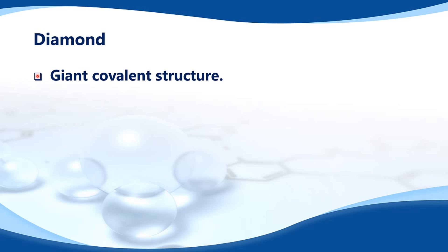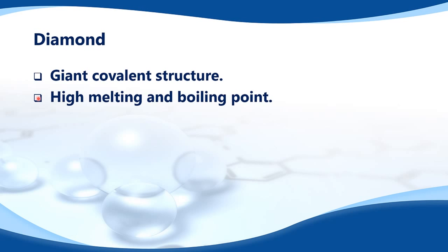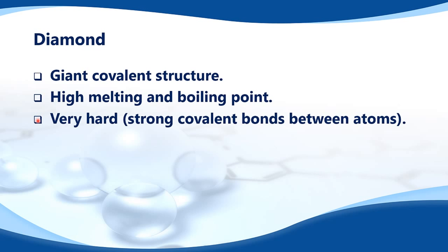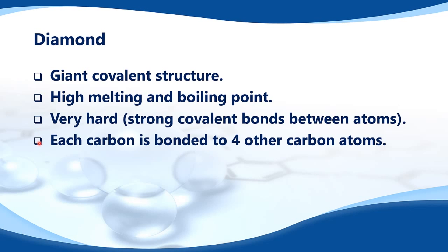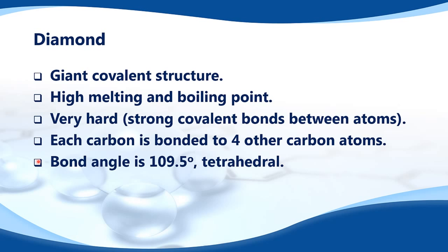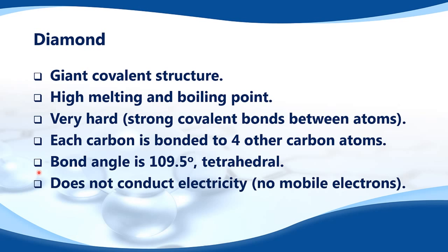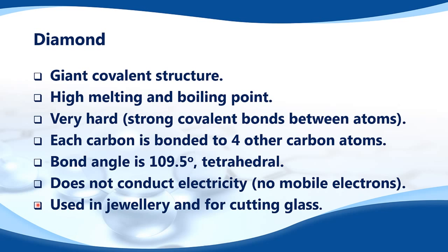To summarize diamond: it has a giant covalent structure with a high melting and boiling point, and it is very hard. Each carbon is bonded to four other carbon atoms at a bond angle of 109.5 degrees tetrahedral. It does not conduct electricity because it has no mobile electrons. Diamond is used in jewellery and for cutting glass.